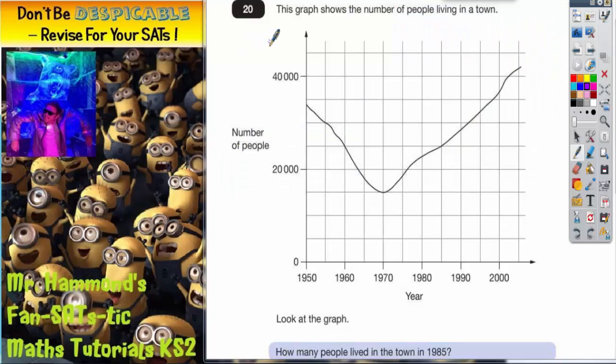Question 20 is all about reading information from a graph. It says this graph shows the number of people living in a town. So we've got 1950, 1960, 1970, 1980, and so on. We've got the year across the bottom and the number of people up the side, but we've only got 20,000 and 40,000. So that's not a lot to go on.